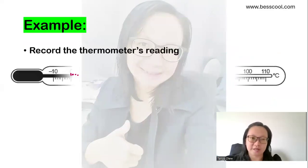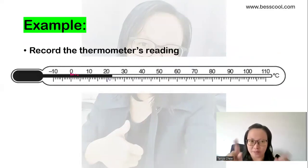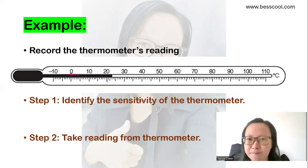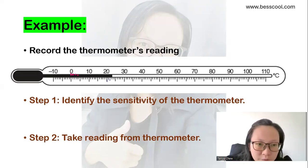I will give you one example. This is a past question that I copied. Record the thermometer's reading. So what you are supposed to do is step one, you have to identify the sensitivity of the thermometer. So what is sensitivity again? Sensitivity is just simply the smallest division on the thermometer. So you look at the smallest scale. So this is 10 scale. So the smallest scale is 1, 1 degree Celsius. So you take your reading here, this is 20, 21, 22, and 23. So the reading is 23 degrees Celsius, just like that.